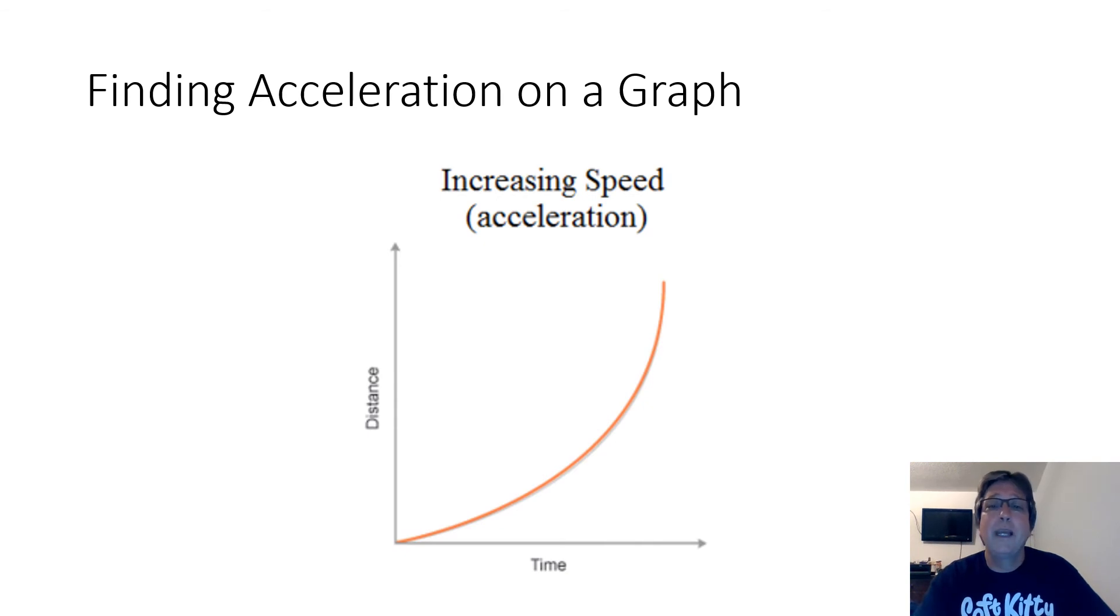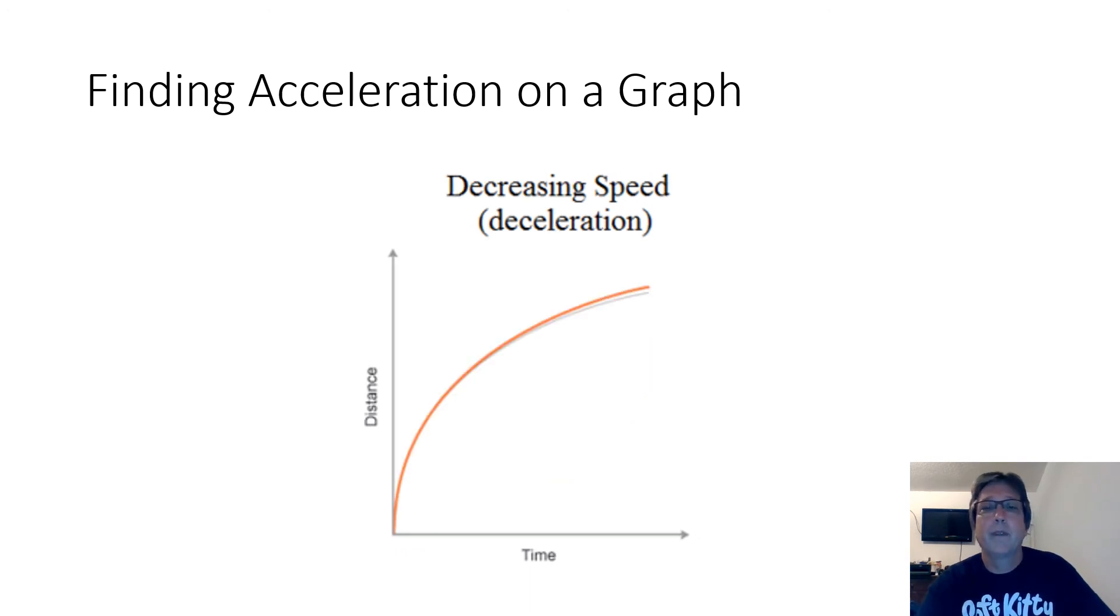Let's look at a couple of examples. Here we have an object that's speeding up. Notice that the slope is increasing. And here we have a distance versus time graph for an object that's slowing down. And here the slope was pretty steep and it tails off.